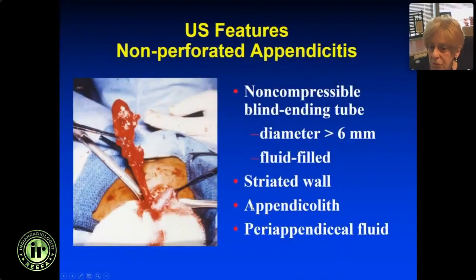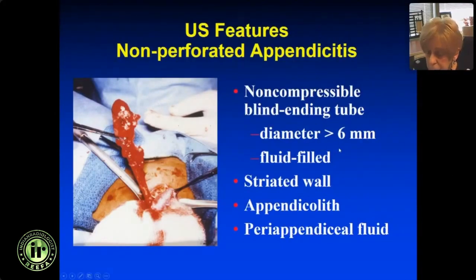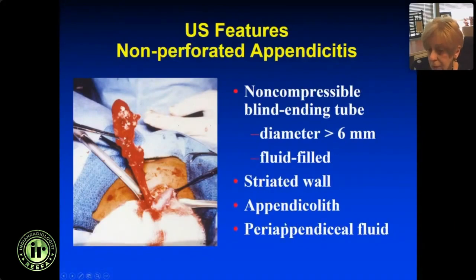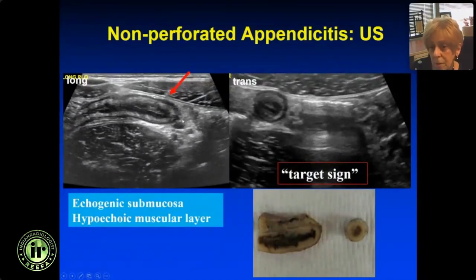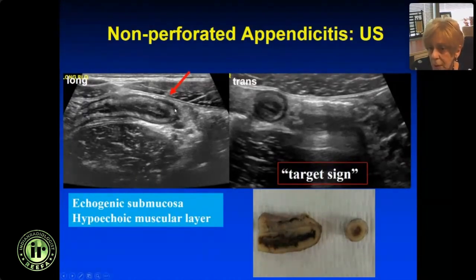Non-perforated appendicitis appears as a blind-ending tube greater than 6 millimeters in diameter. It is fluid-filled, may have air, and if non-perforated, you should see multiple layers of the wall. You may also see fluid around the appendix. Identify the blind end to make sure it's not small bowel. You see the wall is hypoechoic, the echogenic mucosa and submucosa, and a little bit of fluid in the lumen — that's appendicitis. You want to trace the echogenic submucosa around the appendix; if it's absent, the appendix is more likely ischemic or going to perforate. On transverse view it's a target sign.